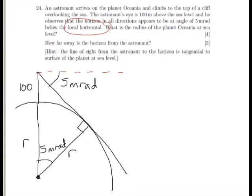So, we can use trigonometry to work this out. We have a right angle triangle, we know the angle at the bottom is 5 milliradians, we know the adjacent length, and we know the hypotenuse, so we need to use cosine.